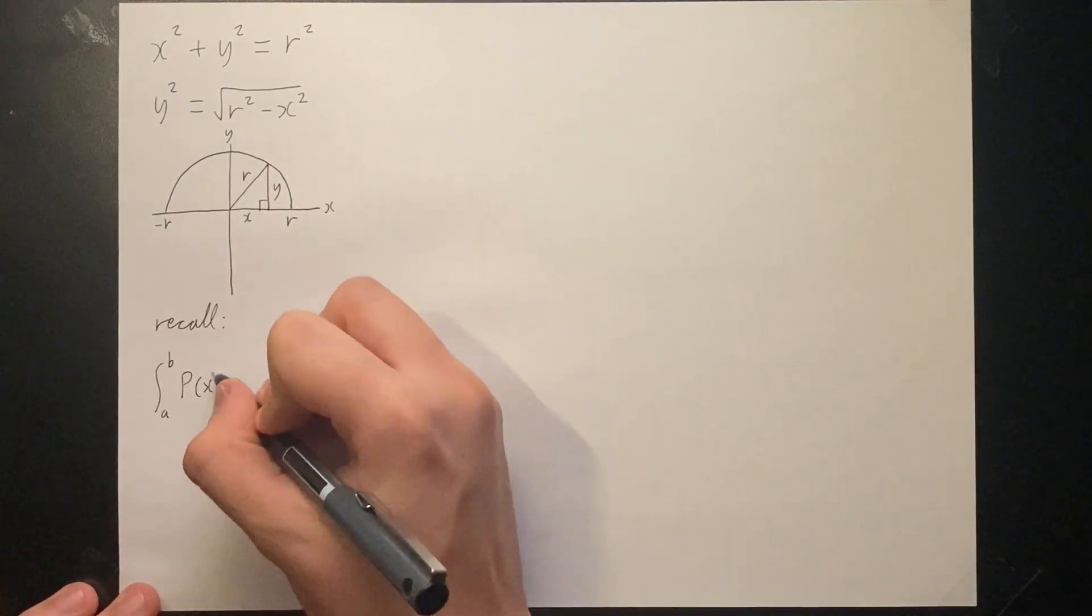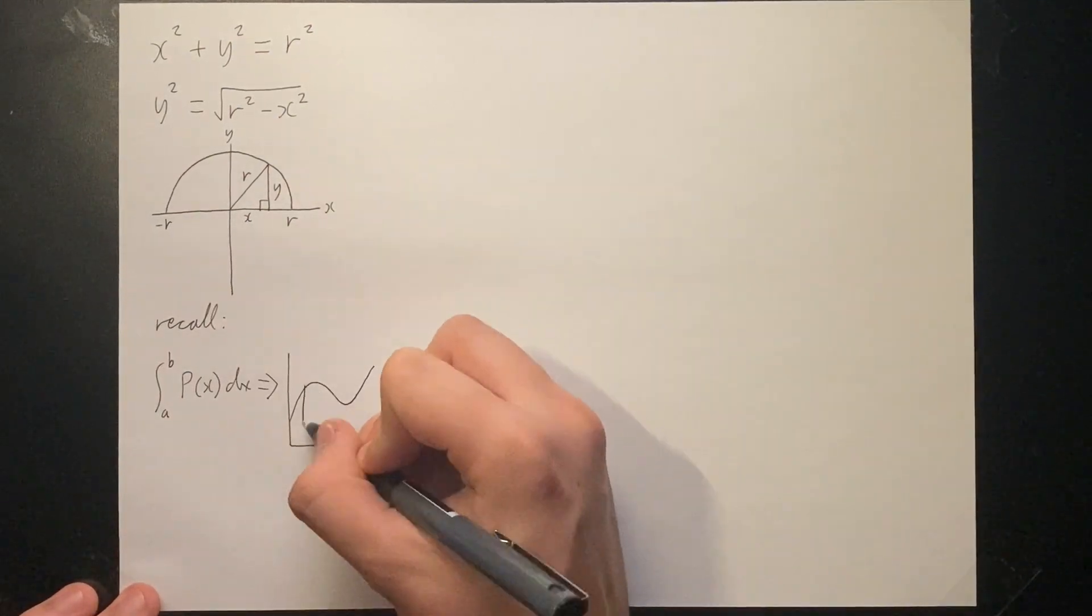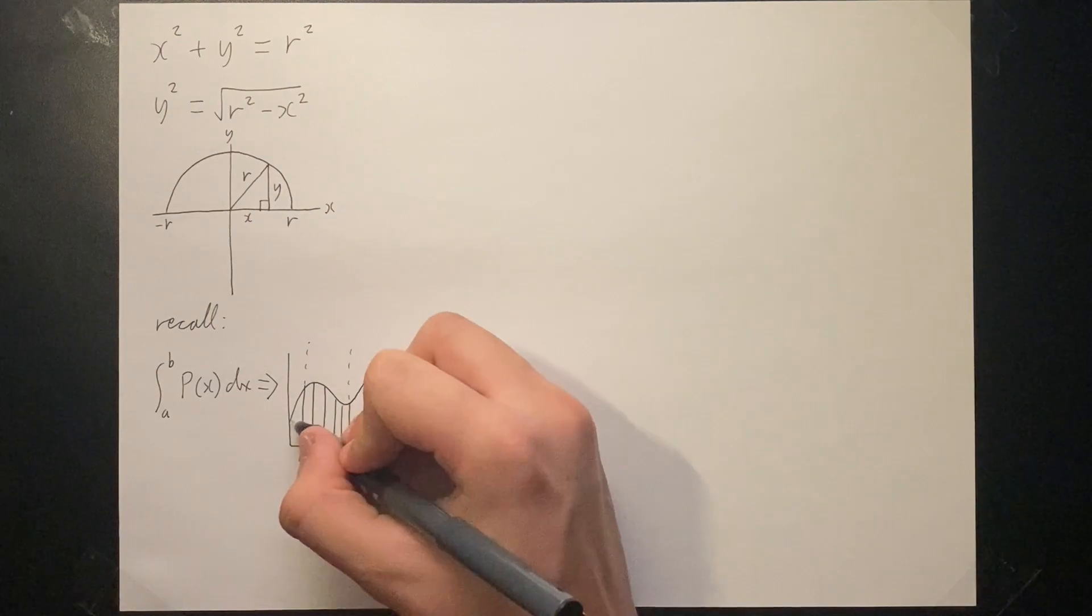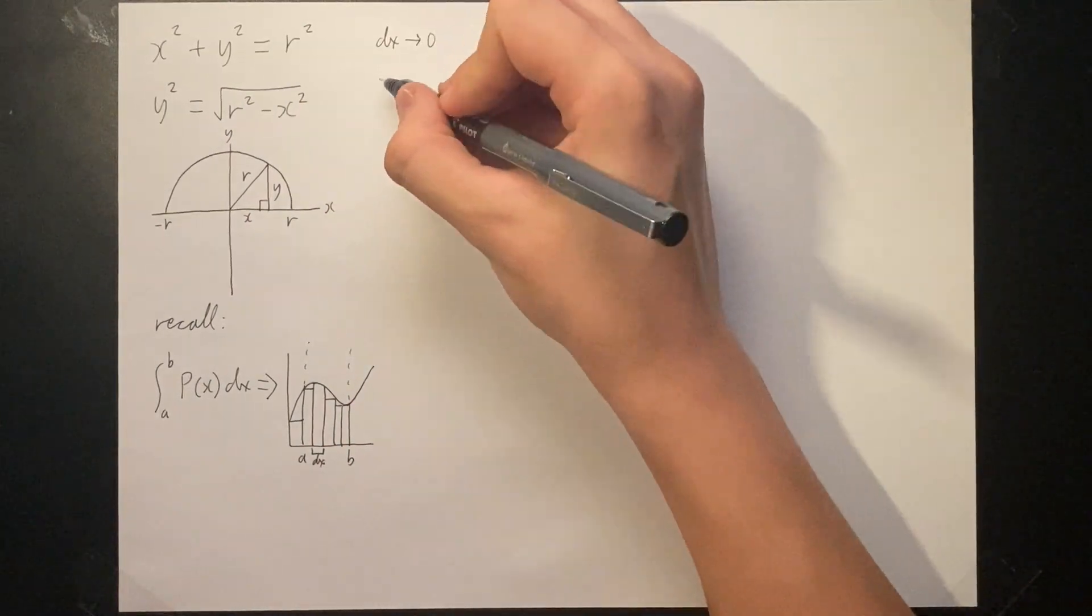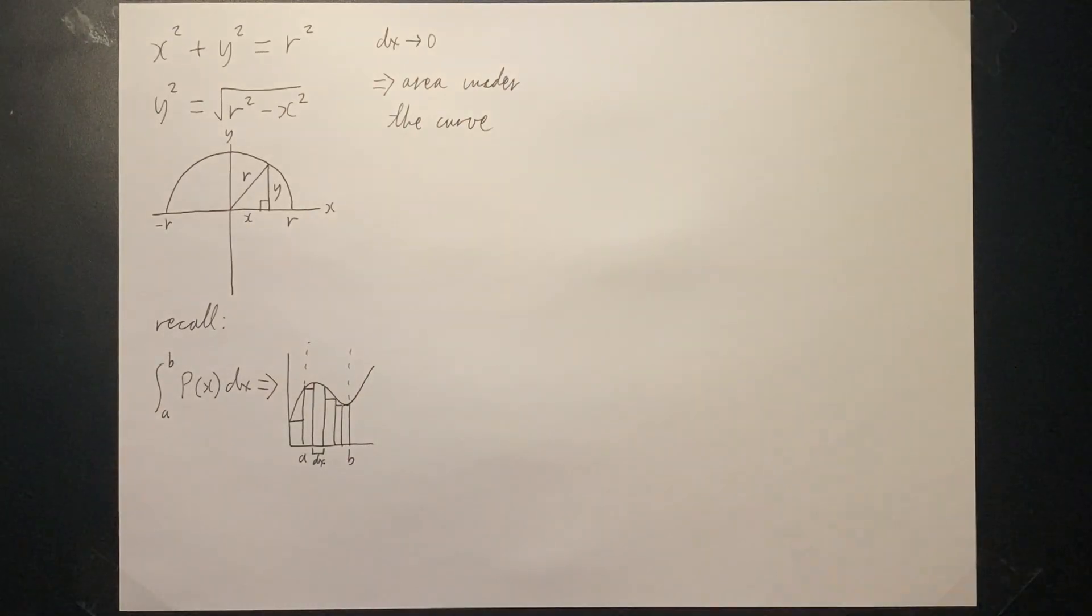Recall that the integral of any function bounded from a to b represents the sum of all the infinitesimal rectangles that add up to the area under the curve from a to b. We can now apply the concept of volumes of rotation.